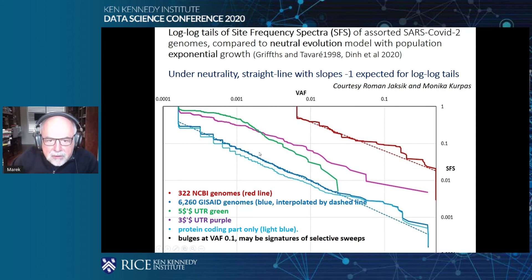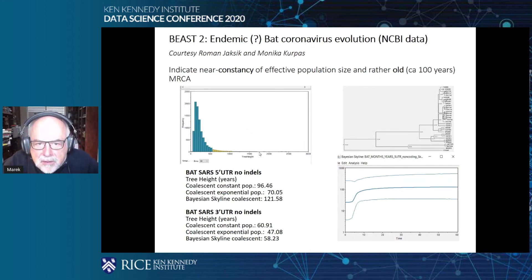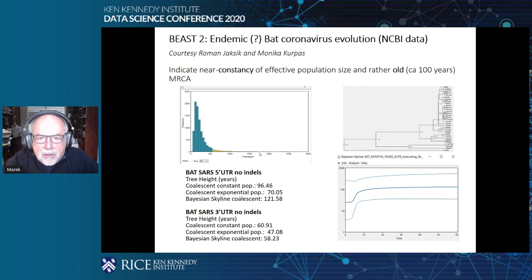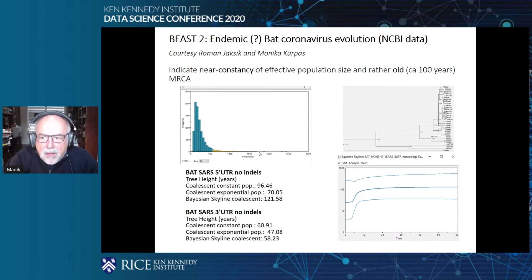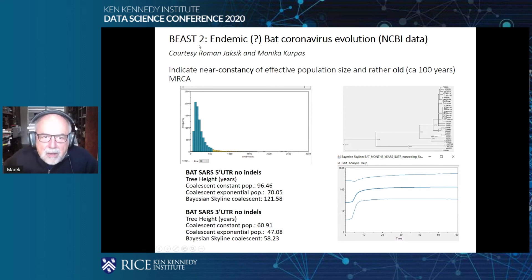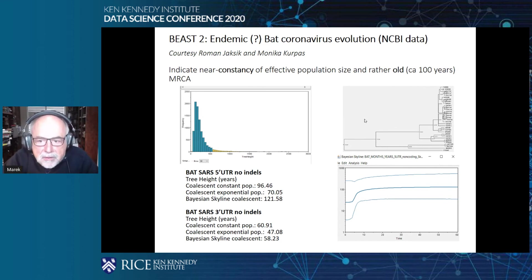I would like to show one more slide showing something very characteristic for bat coronavirus evolution. The number of sequenced whole genomes of bat coronaviruses is small — something like 50 — which is astounding considering the level of interest in these genomes. I'm afraid that they are sleeping somewhere unknown to the community at large. Anyway, we used a very powerful phylogenetics program called BEAST 2, which is a real beast and very difficult to use, to build phylogenetic trees of bat coronaviruses.